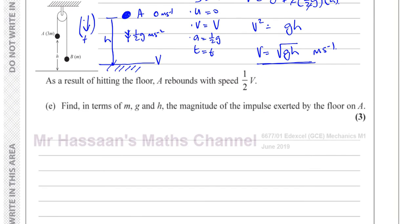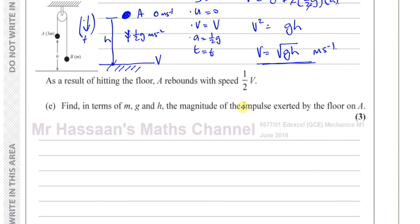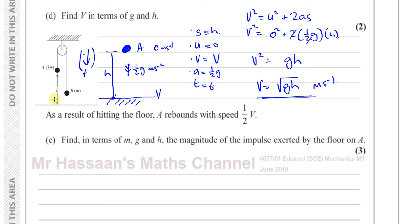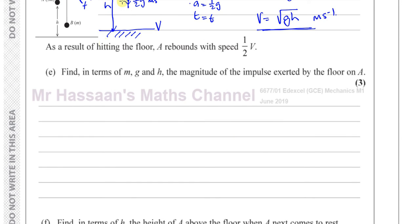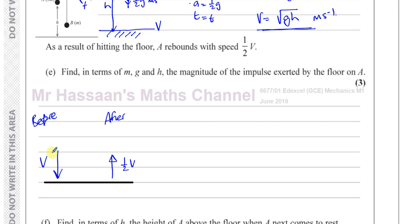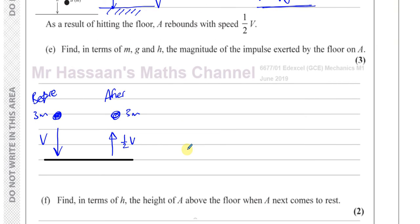For part E: as a result of hitting the floor, A rebounds with speed ½V. Find in terms of M, G, and H the magnitude of the impulse exerted by the floor on A. A hits the floor with speed V downward and rebounds with speed ½V upward. The mass of A is 3M.